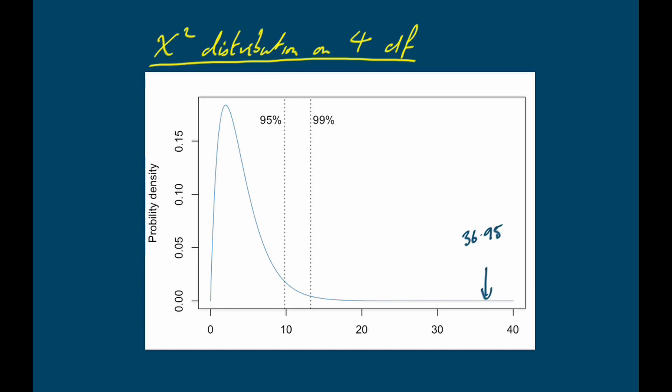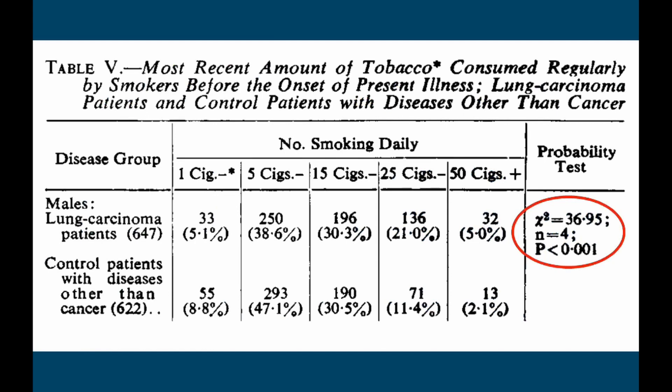Let's go back to the Doll and Hill paper — I'm going to show you that table again but this time with the statistical analysis included. You can see on the right-hand side that they did exactly what we've just done: they did a chi-square test calculated on four degrees of freedom, reporting it as having a p-value of less than 0.001. So that pattern we're seeing — where lung cancer patients tend to be in the heavy smoking categories and the non-lung cancer patients tend more to be in the light smoking categories — is very unlikely to have arisen just by sampling error.